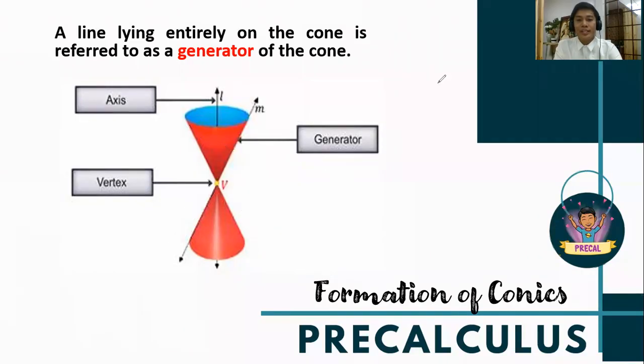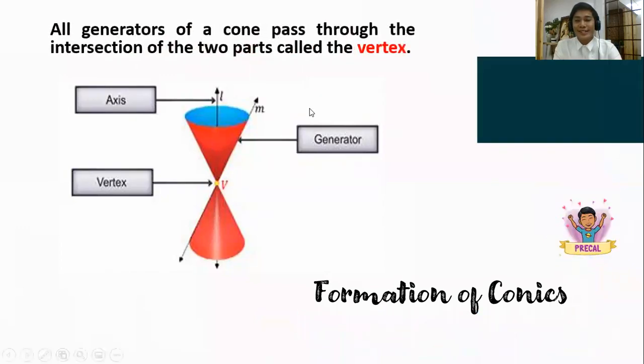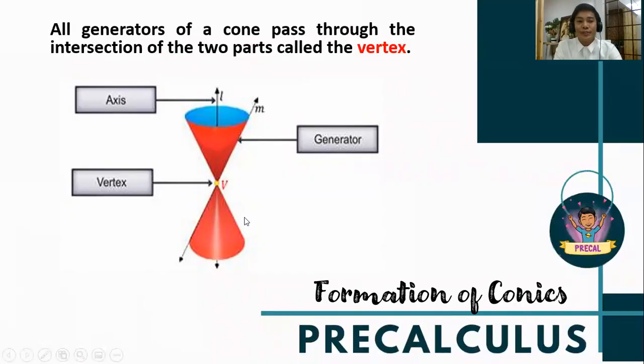Consequently, we also have in the figure what we call the vertex. All the generators of the cone pass through the intersection of the two parts. So the vertex is the intersection of the double right circular cones.